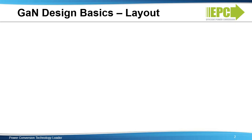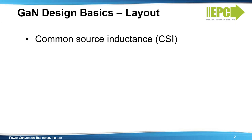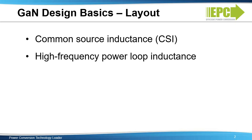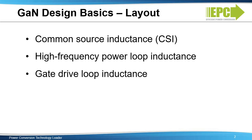It is not possible to reduce all components of inductance equally, and therefore they will be addressed in order of importance: starting with common source inductance, then high-frequency power loop inductance, and lastly gate drive loop inductance. Finally, we'll show an example of an optimum layout to achieve the maximum performance of EGAN FETs.